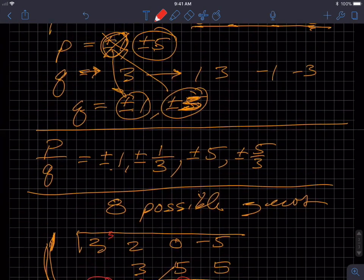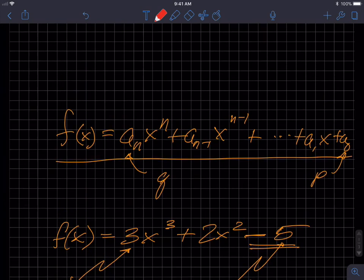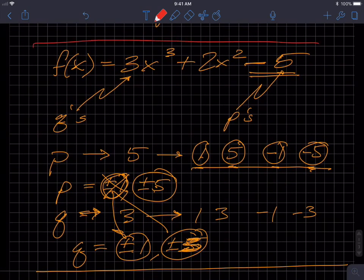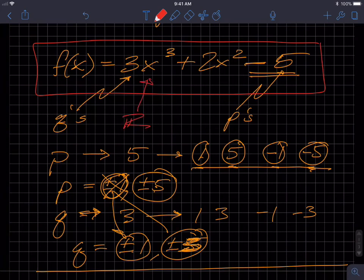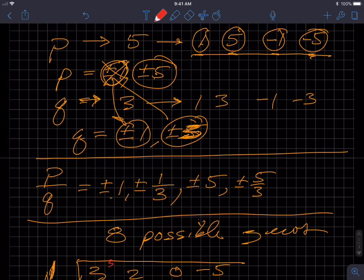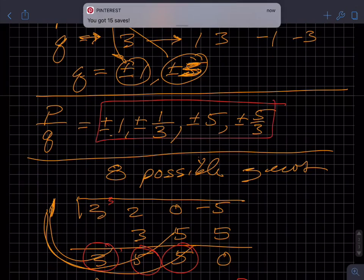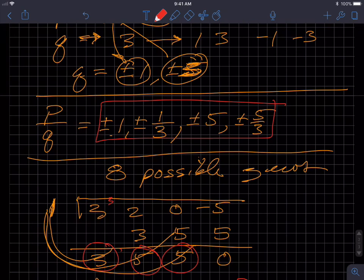So the magic of the rational zero theorem is the following. When I initially have this, if I wanted to start guessing at what the zeros are, I can have any real number as a possible zero. And so that means there's infinitely many real numbers. And I can use the rational zero theorem to take infinitely many and cut it down to 8 to try.